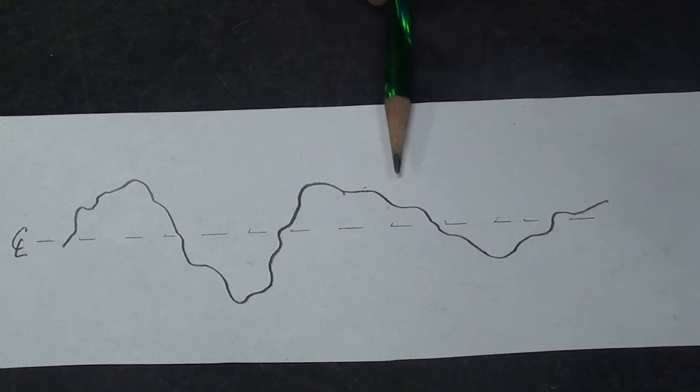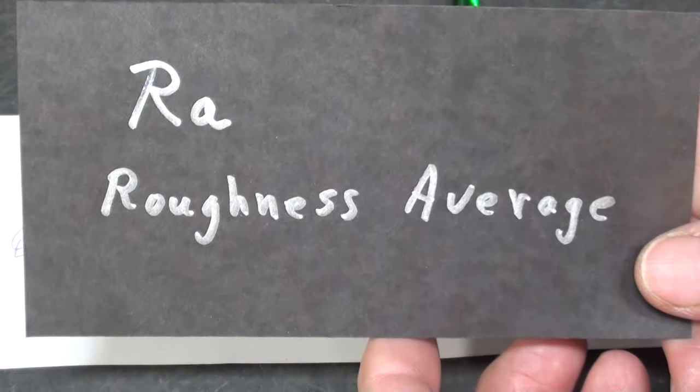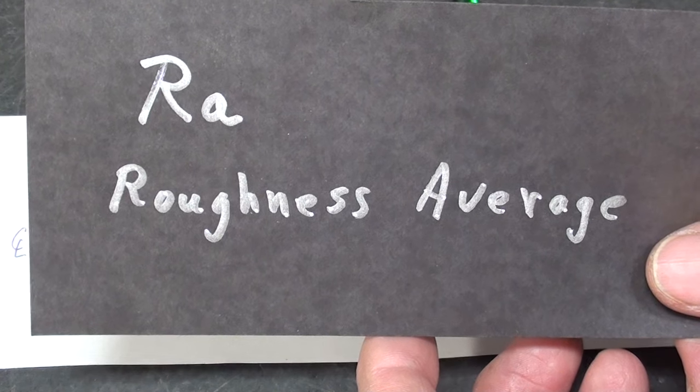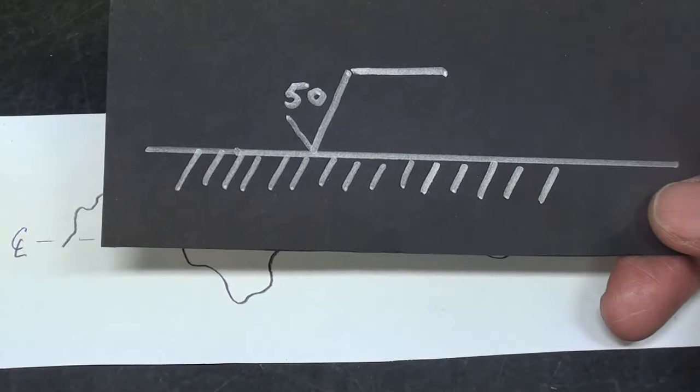Which again we call the RA or I call it the RA roughness average. Remember that there are other ways of determining roughness too as well as this, but this is the most common one that would be used in a factory and that is often specified on a drawing like this and that's the symbol for it.